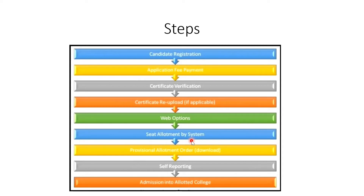You will receive an allotment order for a particular university. If you get a provisional allotment order, you will be confirmed for that department. If you get a 50% or complete admission in college, you may proceed. Then you can go to the second phase counselling, and then third phase counselling.